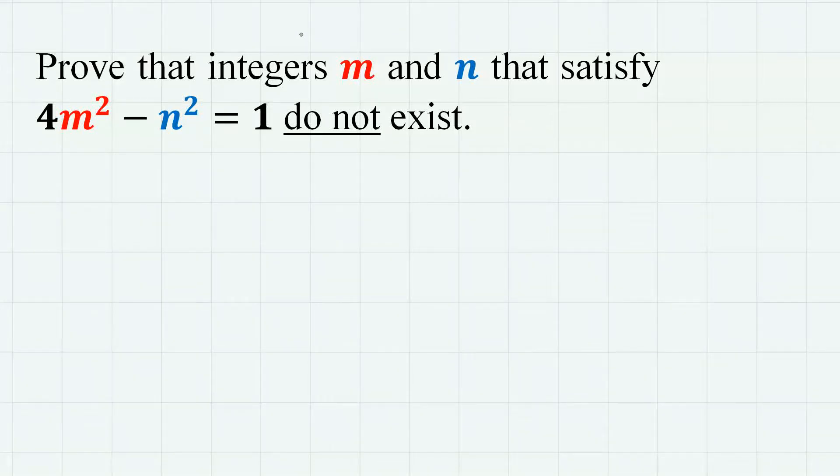Hello and welcome to my video. Today we are going to prove that integers m and n that satisfy 4m² - n² = 1 do not exist.